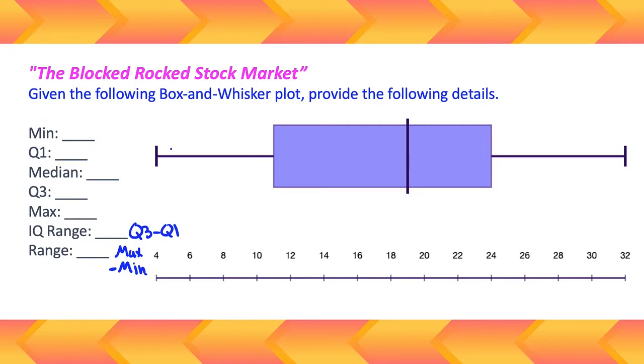All right, so the minimum value is this one right here, the smallest whisker on the left. The largest whisker, end of the whisker I should say, that's the max. Q1 is the bottom edge of the box part of the box plot.